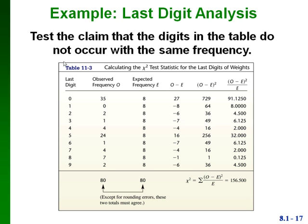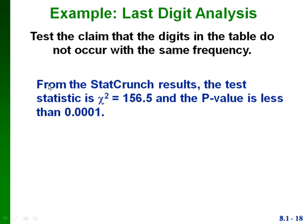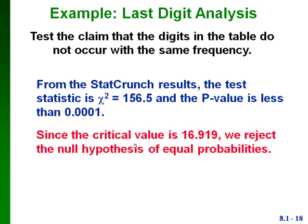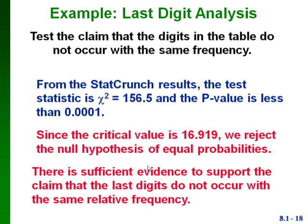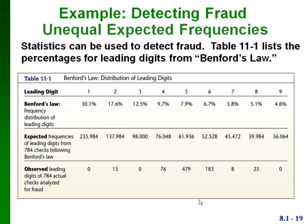Here's a table showing how you would calculate the test statistic by hand — I'm not going to expect you to do this, but in each category you find the difference between the observed and expected frequencies, square it, and divide by the expected frequency, then add up that last column. From the StatCrunch results, our test statistic was 156.5 and our p-value was less than 0.0001. Our critical value was 16.919. Since our test statistic is much larger, we reject the null hypothesis. With the p-value also smaller than alpha of 0.05, there's sufficient evidence to support the claim that the last digits don't occur with equal frequency — meaning the weights were reported rather than actually measured.